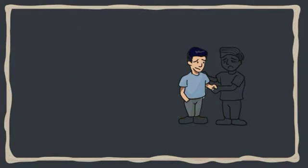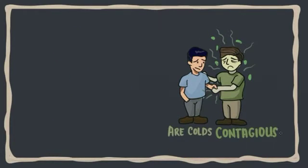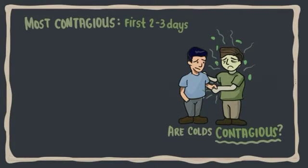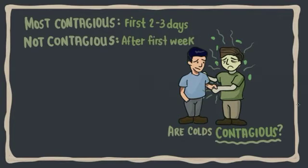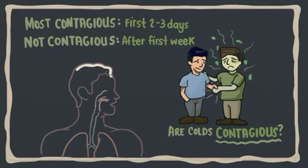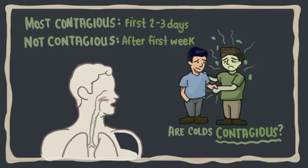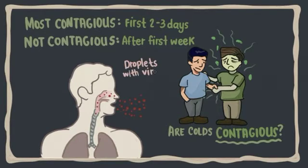So are colds contagious? Yes, they are contagious. People are usually most contagious for the first 2 to 3 days of a cold, and a cold is usually not contagious after the first week. Cold viruses are spread through tiny air droplets released when a sick person sneezes, coughs, or blows his or her nose. You can get the virus directly from the air, or you can touch a surface where the air droplets are deposited.